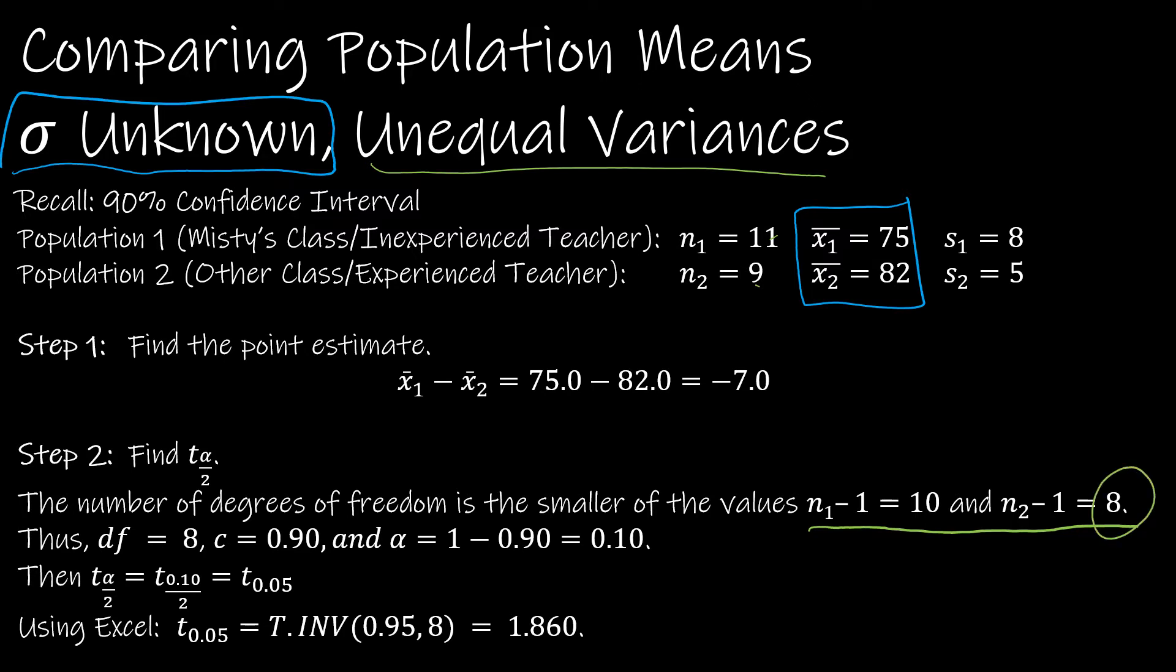I have a 90% interval. So we've got 90 here in the middle. That means there's 5% here and there's 5% here. So I used T inverse 0.95 because that's how much area is to the left of this value, and then comma 8, 8 being the degrees of freedom. So that's our critical value of 1.860.